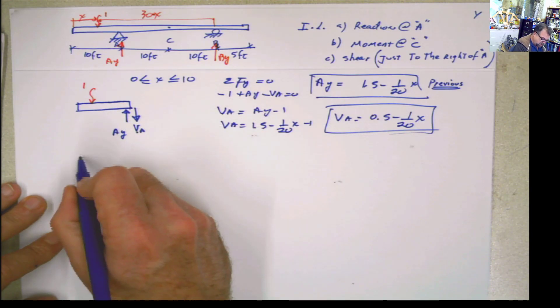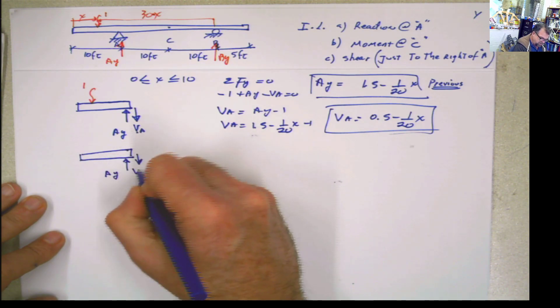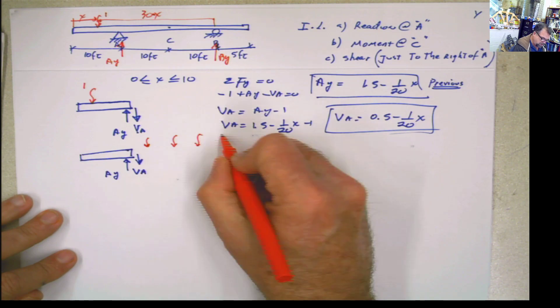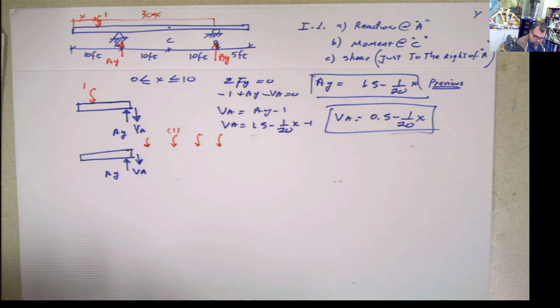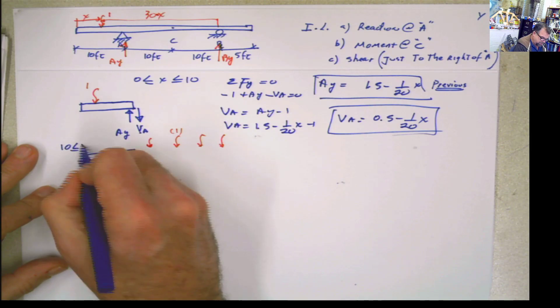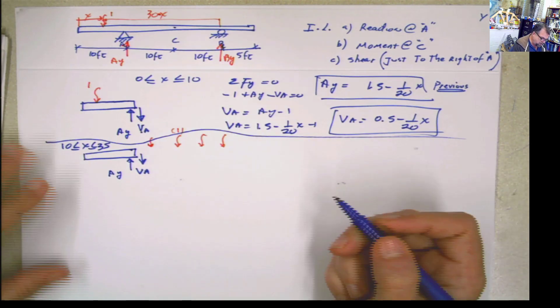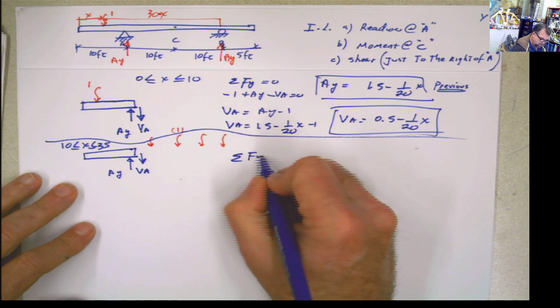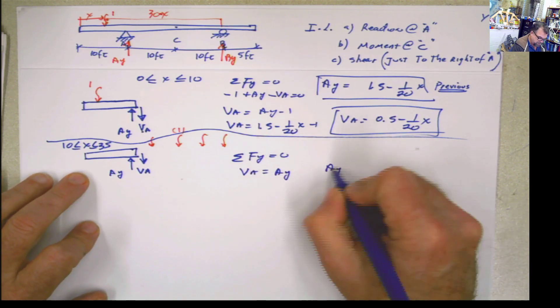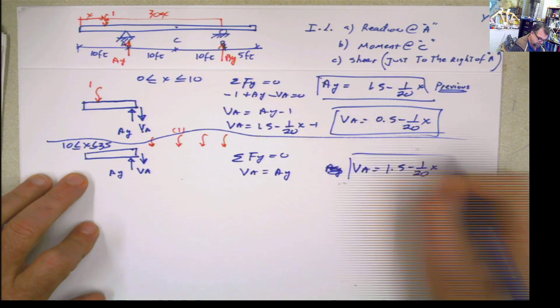Now, what happened after this point? After this point, I'm still going to have the cut there, still going to have the Ay there, still going to have the Va there. However, this load now is acting here or here or here. That is the value of the load 1 in any of those places. And what is that interval then? Between 10 and 35 for the rest of the beam. So what do we do here? Same thing, same difference. Summation of forces in y equals 0. Now, Va is going to be equal to Ay, meaning Ay. Va is going to be equal to 1.5 minus 1 over 20x.